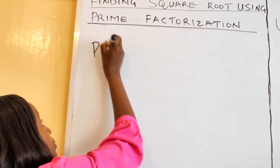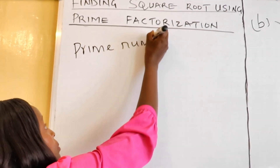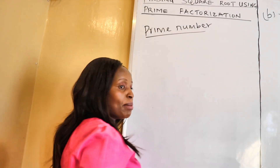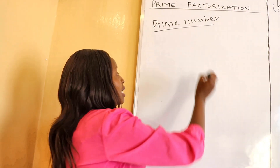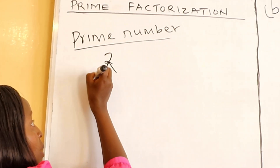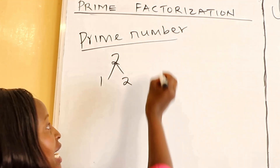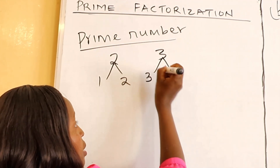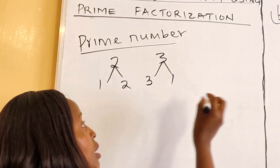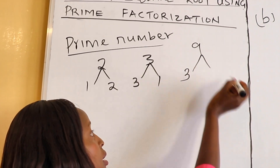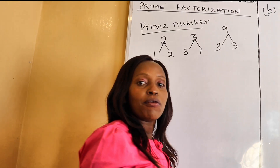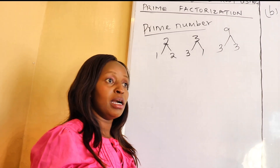A prime number is a number that is divisible by one and itself. For instance, the number two can only be divisible by one and two. A number like three can only be divisible by three and one. Now, a number like nine is divisible by three and three, and therefore nine cannot be termed as a prime number.